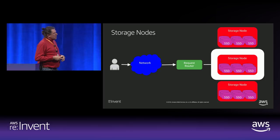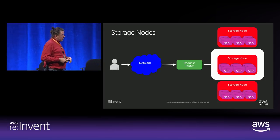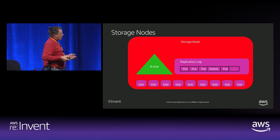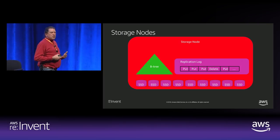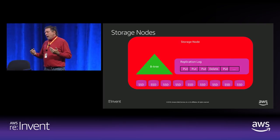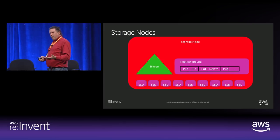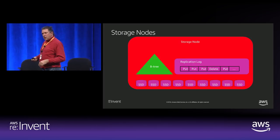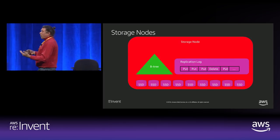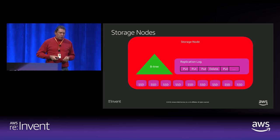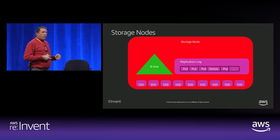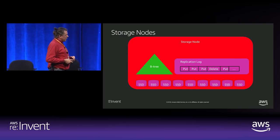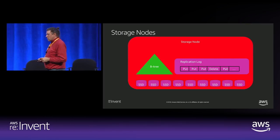Inside storage nodes there are two data structures: a B-plus tree and a replication log. The B-tree is where we do all query and user interactions — puts, gets, scans, queries are all against the B-tree. The replication log records every mutation that happens against that particular partition. These are really the two internal data structures of a storage node.